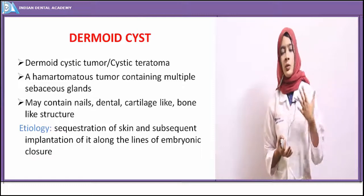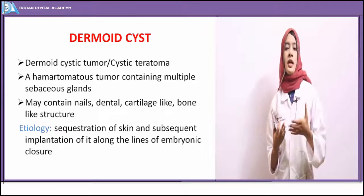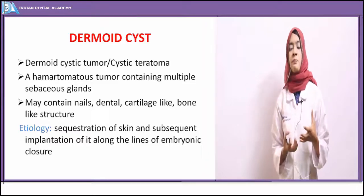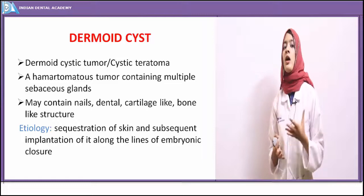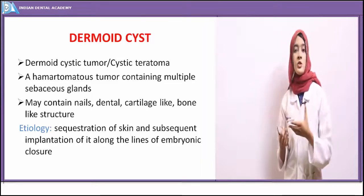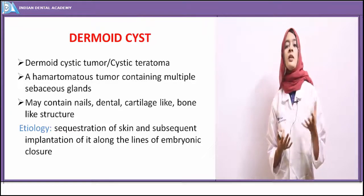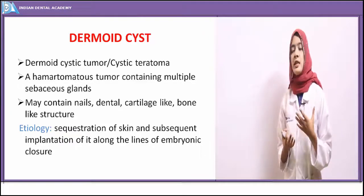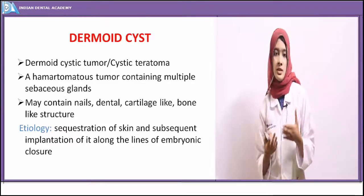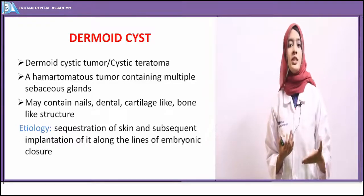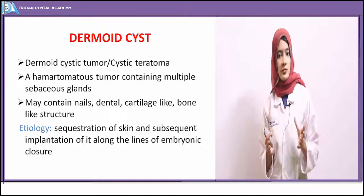So, what is a dermoid cyst? Dermoid cyst is basically a tumor — it is a hamartomatous tumor. It is also known as dermoid cystic tumor or cystic teratoma. It has been more commonly associated with the tumor of the ovary. So it is a hamartomatous tumor which contains multiple sebaceous glands. The dermoid cyst is a hamartomatous tumor but with the clinical appearance of a cyst.